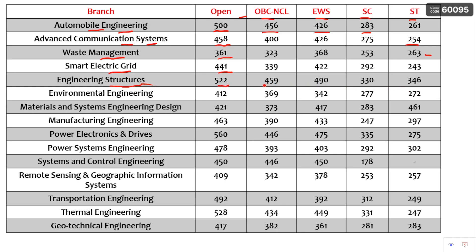For Engineering Structures, the OBC Non-Creamy Layer cutoff is 459. Next, Environmental Engineering — also from Civil Engineering — has an open cutoff of 412. For Materials and Systems Engineering Design, the EWS cutoff is 417, and all other category cutoffs are given here.